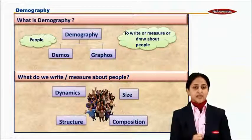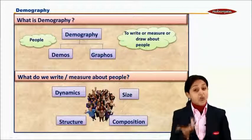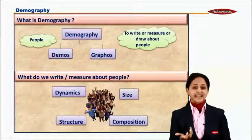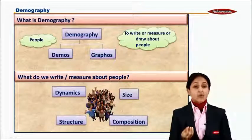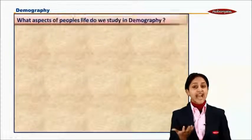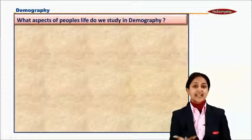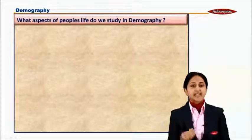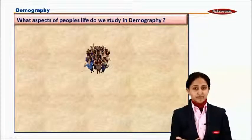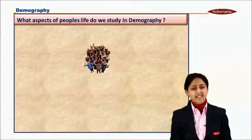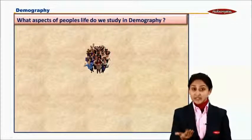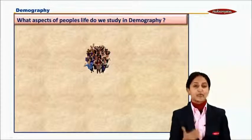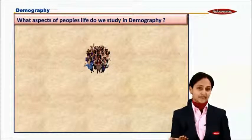Now the question arises, how are we going to measure this? We need to measure this by measuring the various aspects in the life of people. In the life of an individual, many events or milestones occur. Once we start to measure those milestones, we will be able to measure the various aspects of demography.